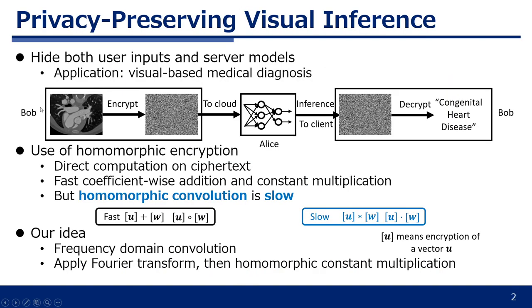Secure inference is something like this. Bob, as a client, first encrypts an image and then sends it to the cloud, Alice. Alice evaluates a neural network on the ciphertext and sends the result back to Bob. Bob decrypts it and gets the same inference results.